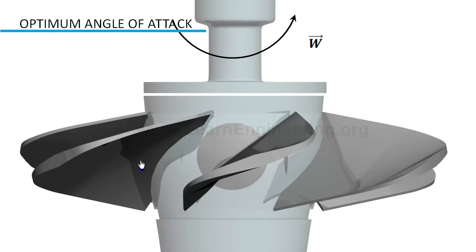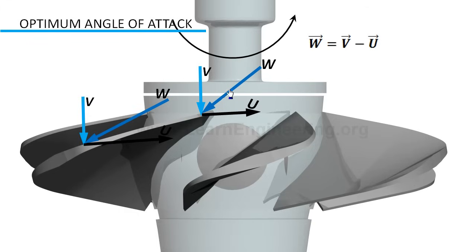Even though absolute velocity is axial, relative velocity will be inclined depending upon blade velocity. Inclination of relative velocity increases as we move from root to tip due to increasing blade velocity.